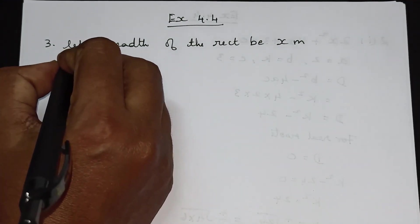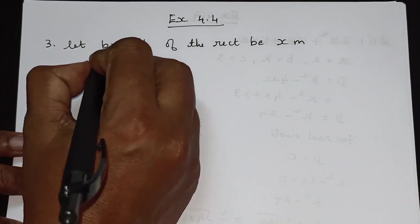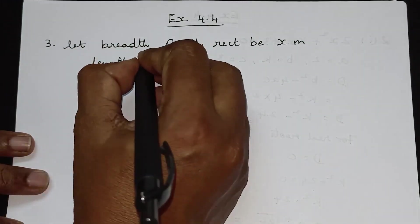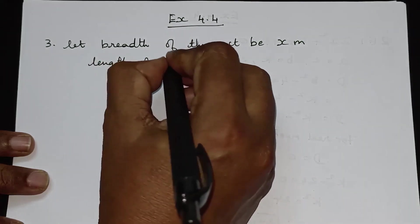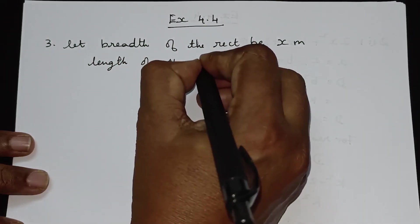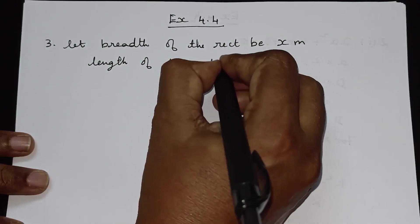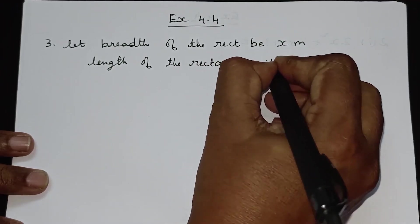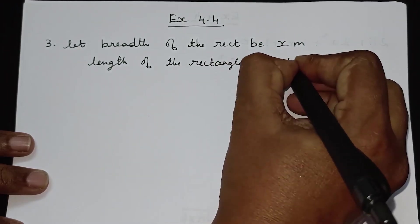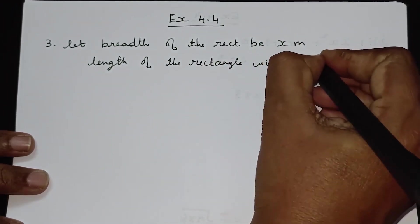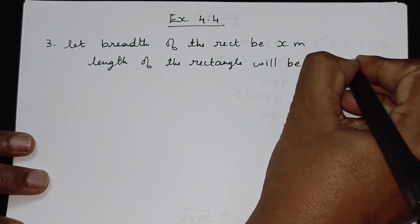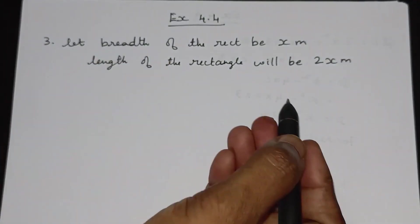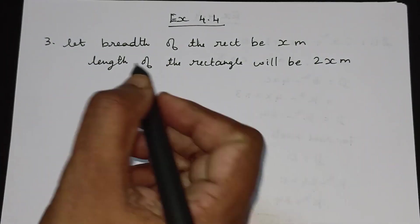Let the breadth of the rectangle be x meters. The length will be 2x meters, since the length is twice the breadth.